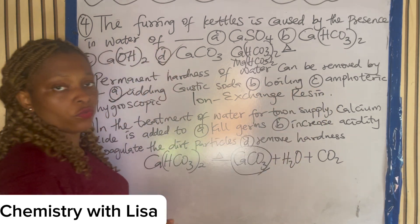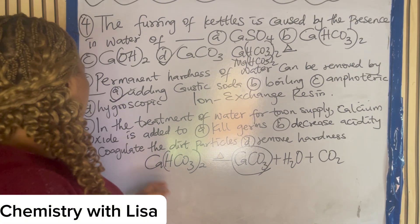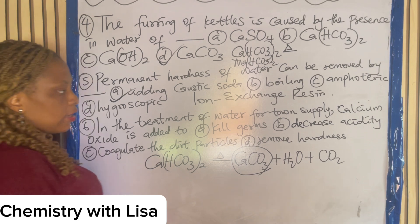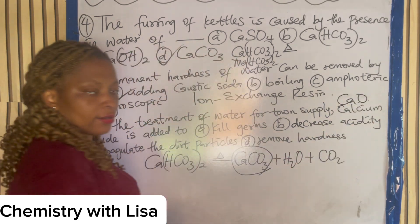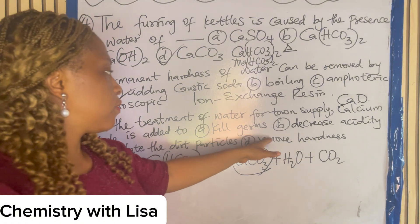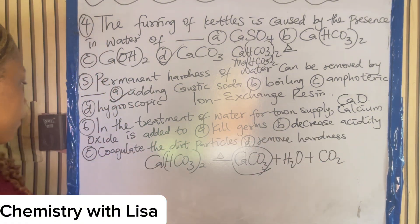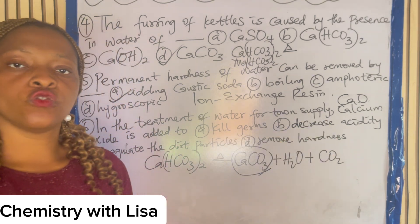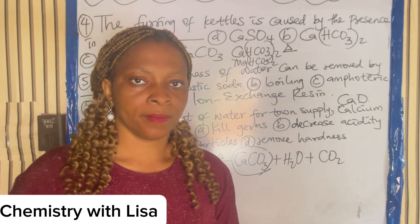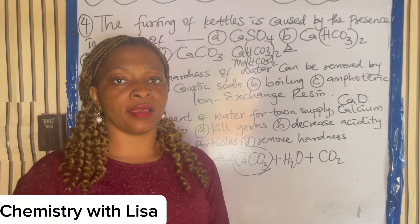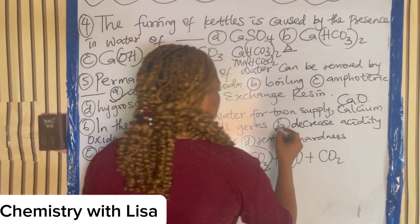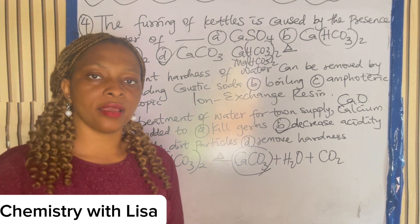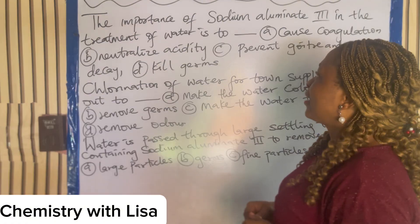Number six: in the treatment of water for town supply, calcium oxide is added to what? The options are: to kill germs, to decrease acidity, to coagulate dead particles, or to remove hardness. Calcium oxide is actually added to reduce the acidity present in the water. So the answer is B — to decrease the acidity present in the water.